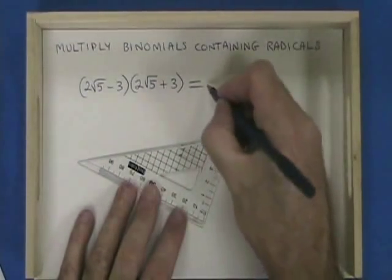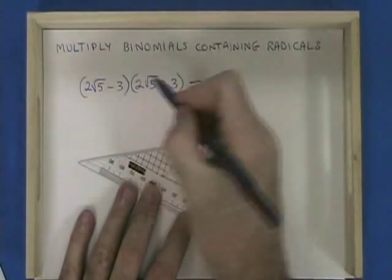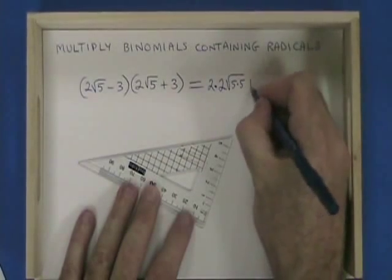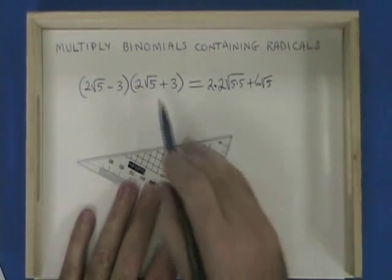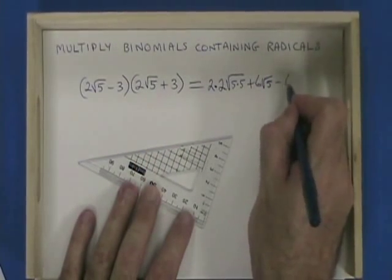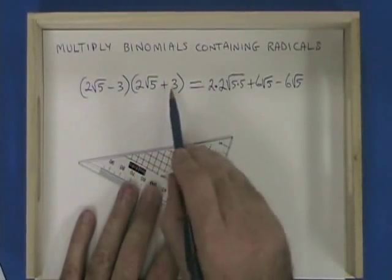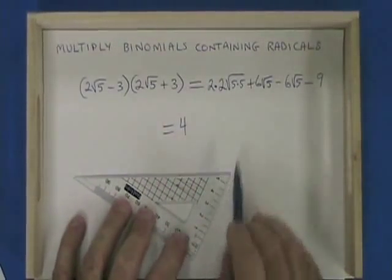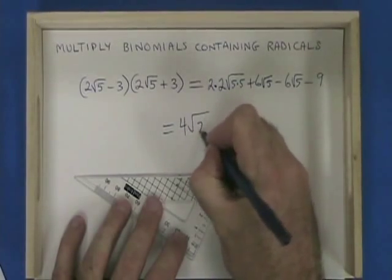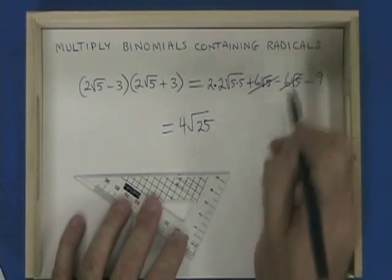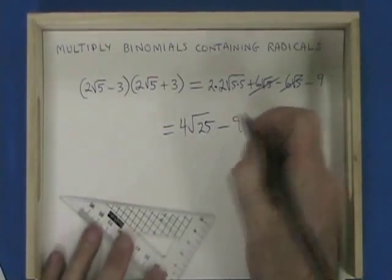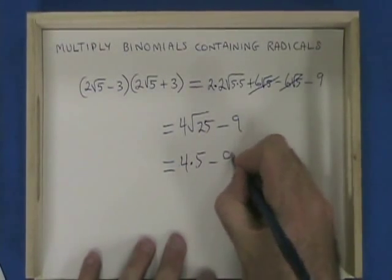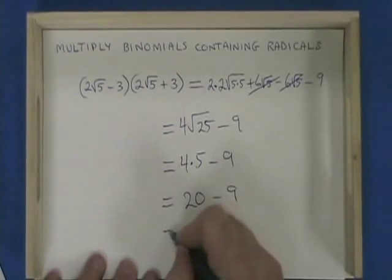Here we have 2 times 2 root 5. Root 5 times root 5. 3 times 2 root 5 is plus 6 root 5. Negative 3 times 2 root 5 is minus 6 root 5. And negative 3 times 3 is minus 9. 2 times 2 is 4, and root 5 times 5 is root 25. Plus 6 root 5 and minus 6 root 5 cancel, and I still have minus 9. The square root of 25 is 5, so this becomes 4 times 5 minus 9, which is 20 minus 9. The answer is 11.